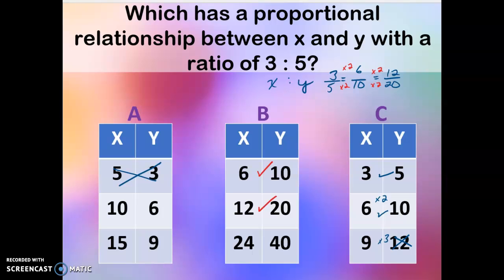So that is also going to fit. The next one we're going to try is 24 to 40. We know that 12 times 2 is 24, so 20 times 2 is 40 and that's correct. So all of those are proportionate. B is our answer.